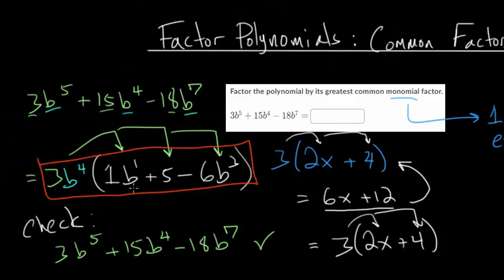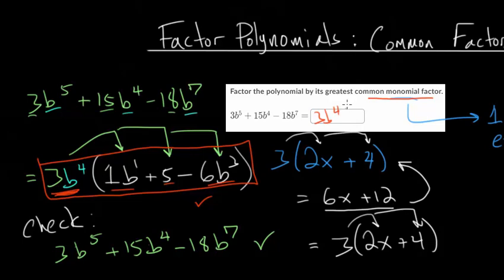You also want to check that there's nothing left in common inside the parentheses. Looking at the numbers, 1 is the biggest number you can divide into all of them, so we can't pull out any more numbers. And this constant term doesn't have a b, so we can't pull out any more b's — confirming this is our final answer. Writing it in standard form with the highest power first: 3b⁴(-6b³ + b + 5).